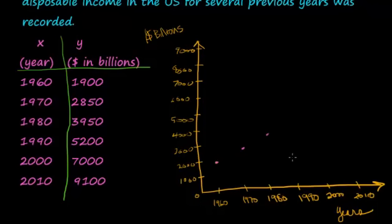In 1990, 5,200, maybe about right there. In the year 2000, it was 7,000 billion. And then 2010, we're up here as high as I can get at 9,100.